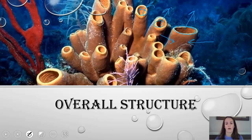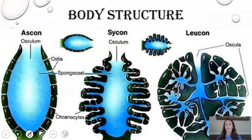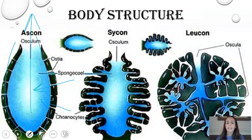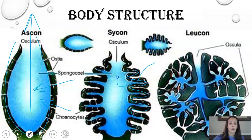Within the body structures, there are three different types you need to know: Ascon, Sycon, and Leucon. The Ascon is the most simple body structure — just a very basic single opening with pores on the sides, and water goes out the top through something called the osculum. The Sycon still has that general cup-shaped structure, with more detail in where the pores are located, so water can come in through any pore and then exit the osculum.